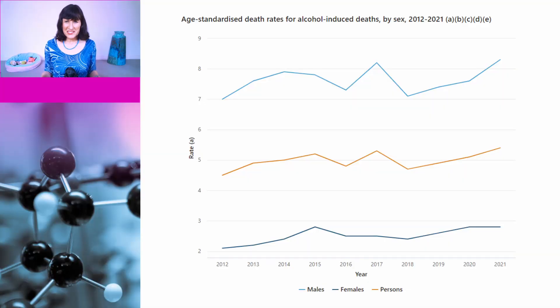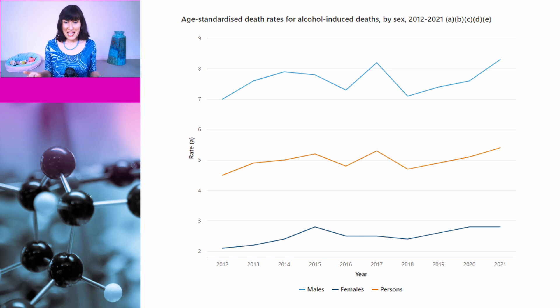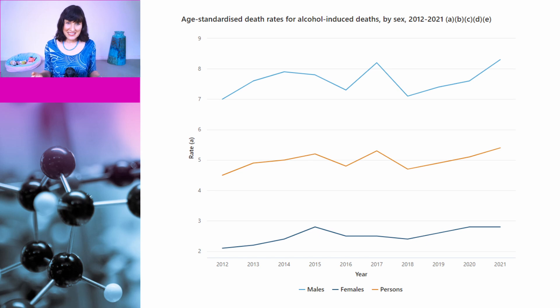One disturbing piece of information from the report is that the death rate for alcohol-induced mortality was at a 10-year high in 2021, driven mostly by males. Many people will assume this is a response to the stress of the pandemic; however, if you read the commentary in the report, the deaths are primarily from chronic conditions like cirrhosis of the liver, which takes years to develop — so it's not directly pandemic related. The report also looked at suicides and drug-related deaths, and both of these decreased during the pandemic.